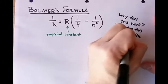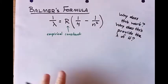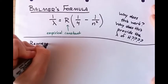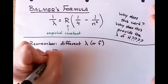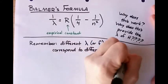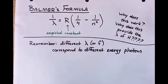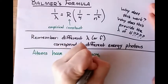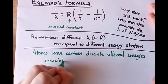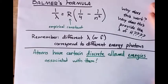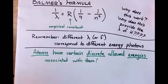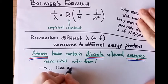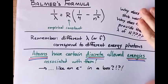Only certain wavelengths of light are emitted and absorbed by hydrogen. Since different wavelengths correspond to different energy photons, that means only certain energy photons are emitted or absorbed by hydrogen. And that means atoms have certain discrete allowed energies associated with them — atoms do not have continuous energies. Trapping that electron in the box is starting to sound a little less crazy now.